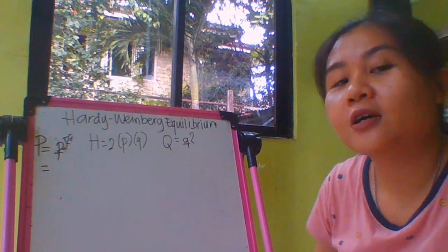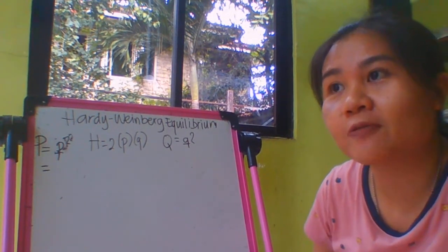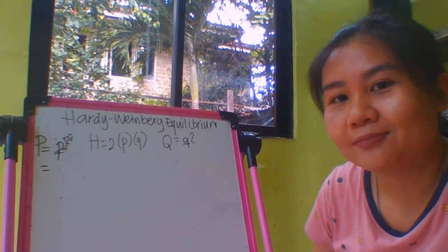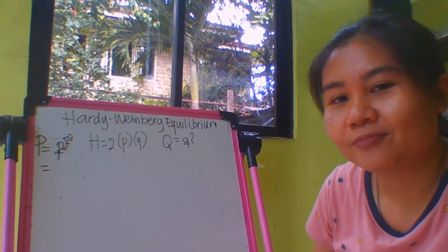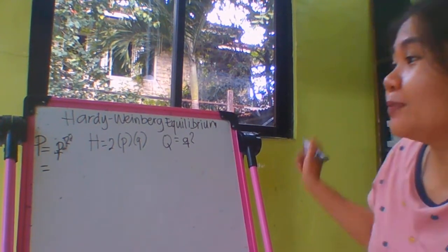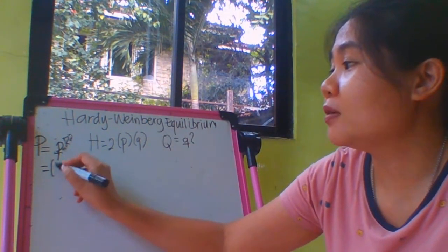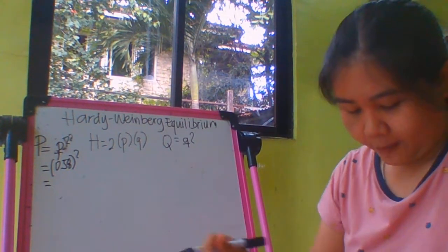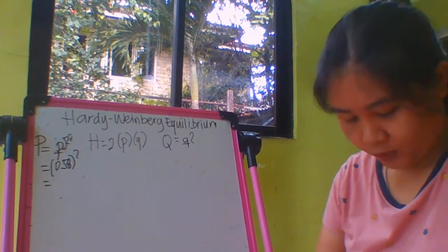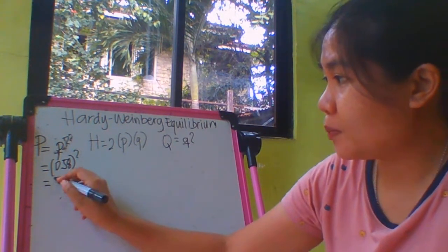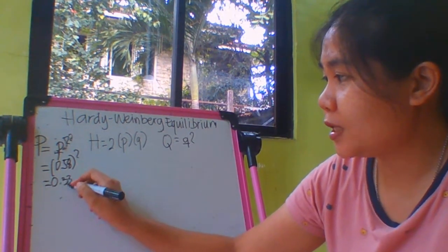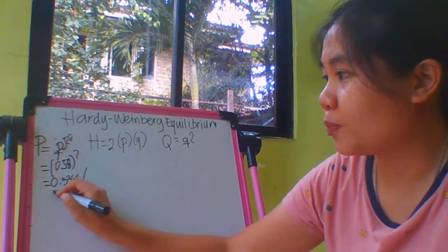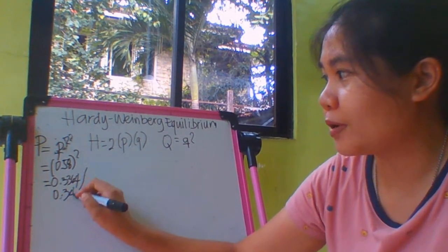Do you remember the value of p? When we solved the Hardy-Weinberg gene frequency, that was 0.58. So 0.58 squared, and that is 0.3364 or 0.34 when we round it off.